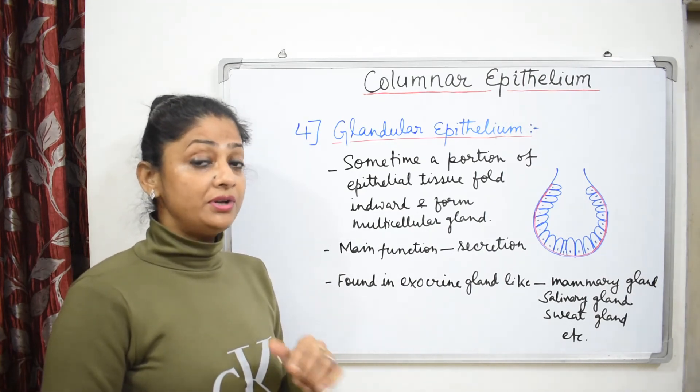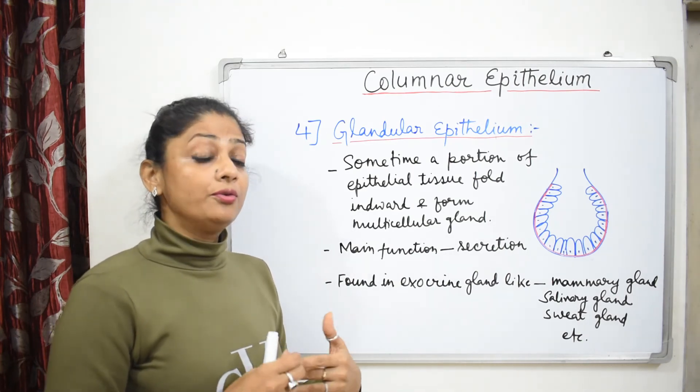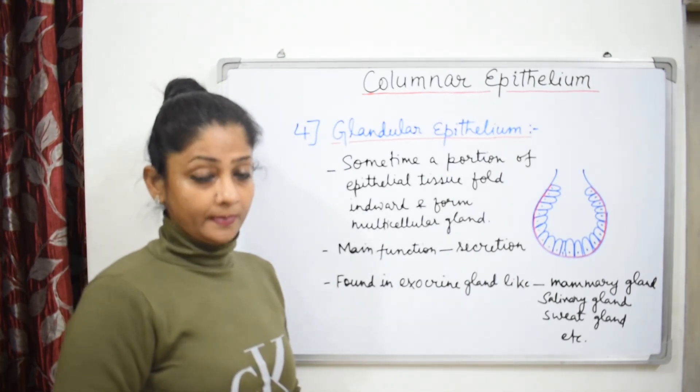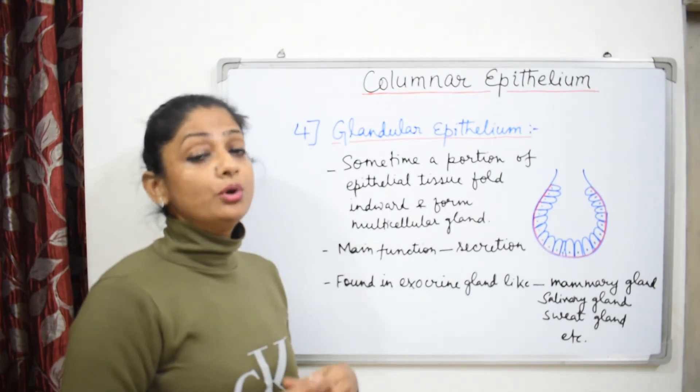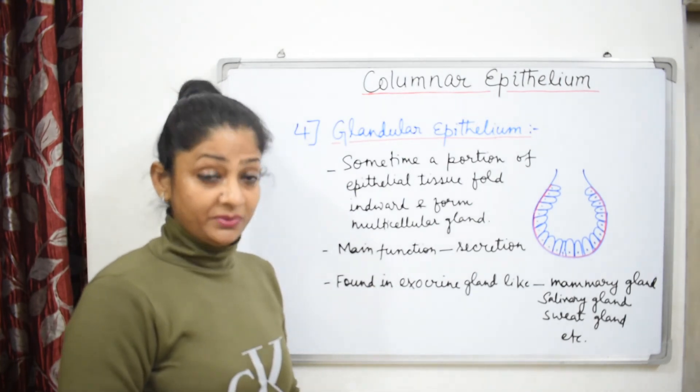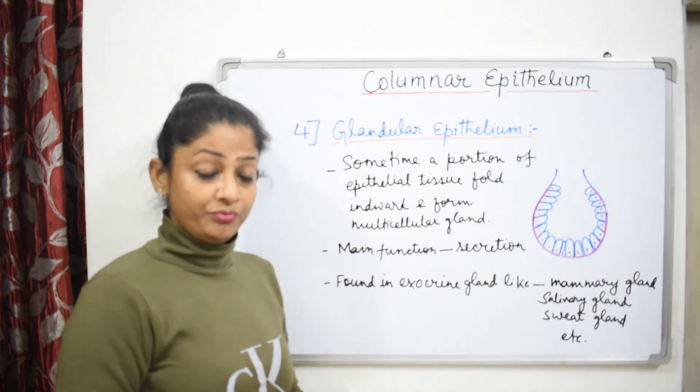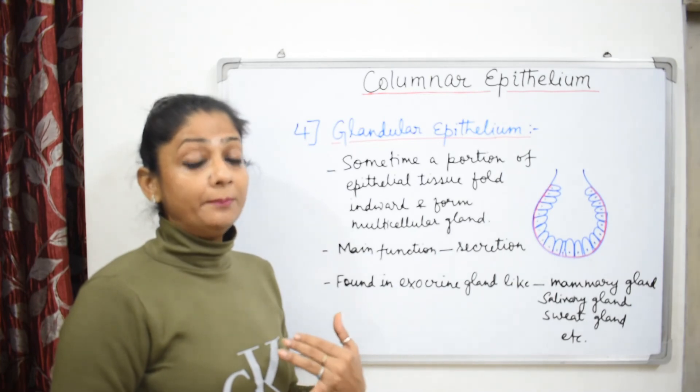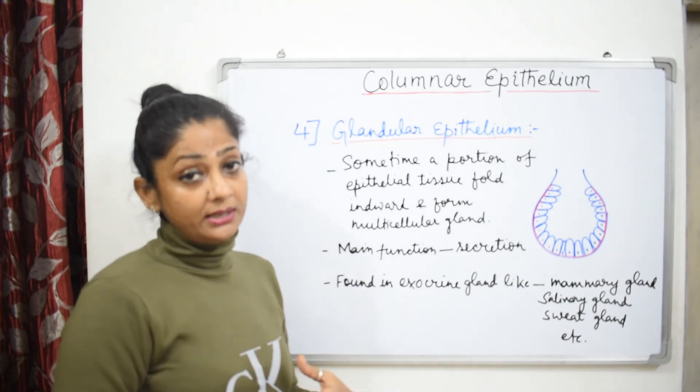Ciliated columnar has cilia on its free surface and it can be found in the fallopian tube and kidney tubules. A special type of epithelium is glandular epithelium. Its main function is secretion and it can be found in the exocrine glands, for example, mammary gland, pancreatic gland, salivary gland, sweat gland, etc.